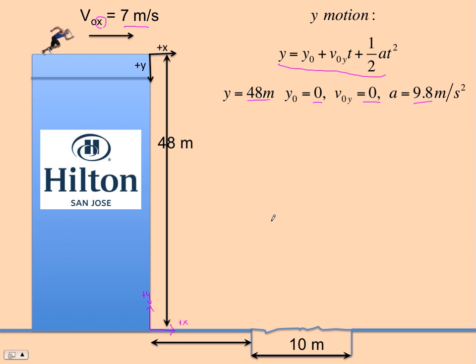So again, if you try this coordinate system down here, you might use different inputs into this equation, but you'll get the same answer. And solving the equation for time, because these two terms are zero, we get square root of 2y over a, and so it's going to take 3.1 seconds to hit the ground.